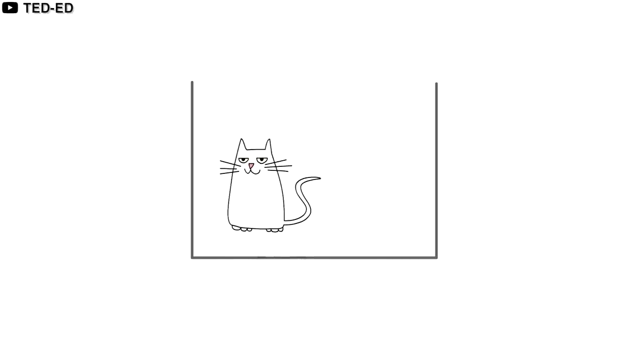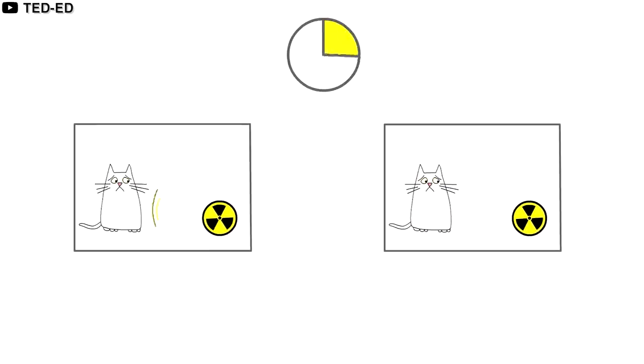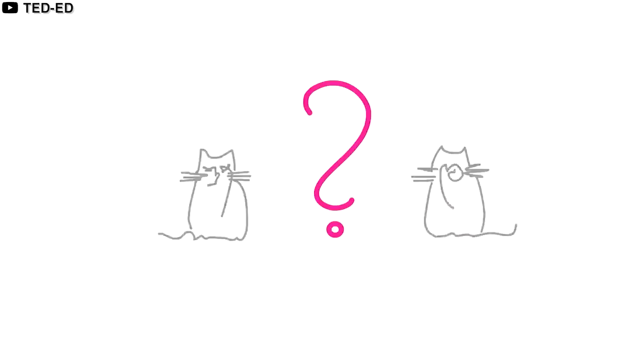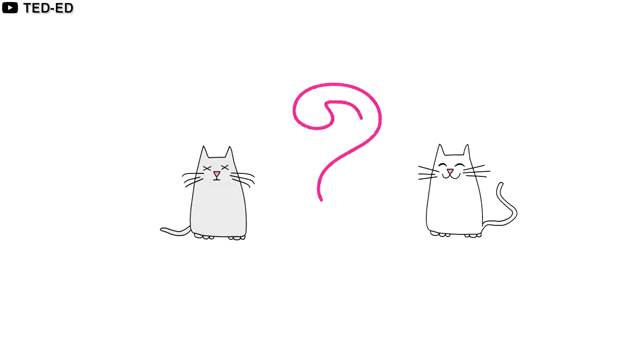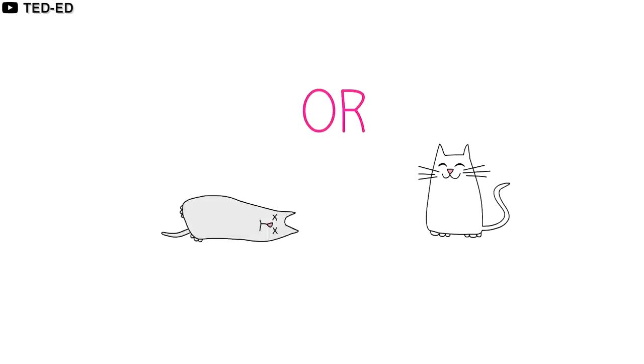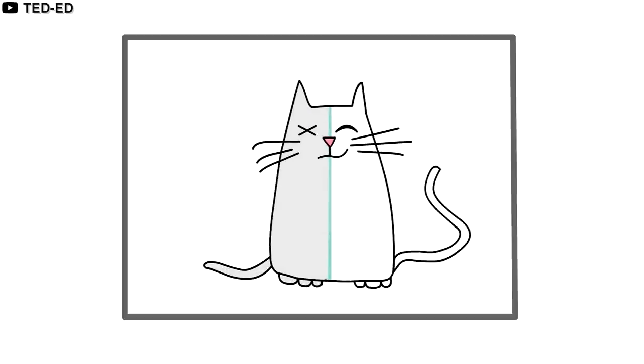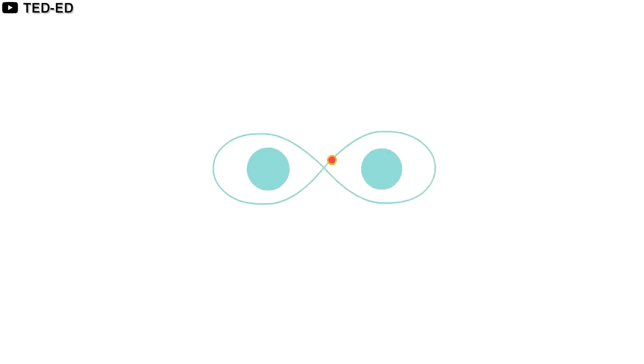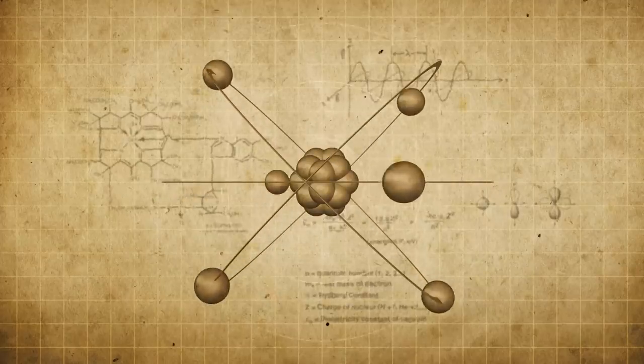We might consider Schrödinger's cat. This experiment consisted of a closed steel container, a cat, and a radioactive poison that will detonate randomly. Now, because we do not know whether the poison has detonated, we can think of the cat as being both alive and dead until we actually open the box to observe it. This attribute of being in two different states at once until measured is called superposition, and it's a characteristic feature of subatomic particles like electrons and photons.